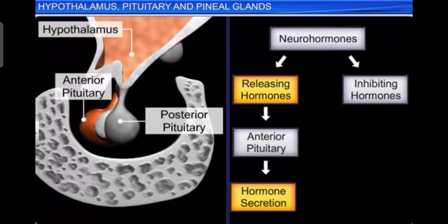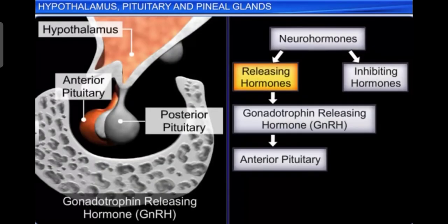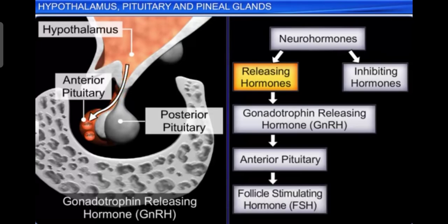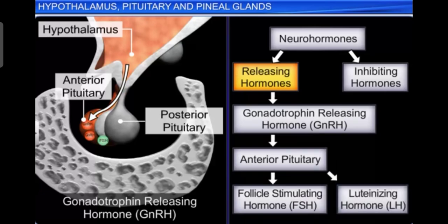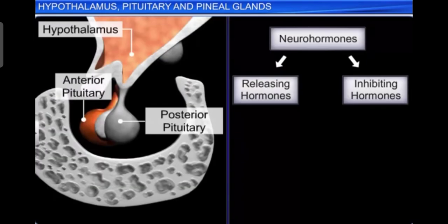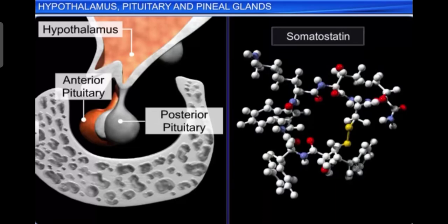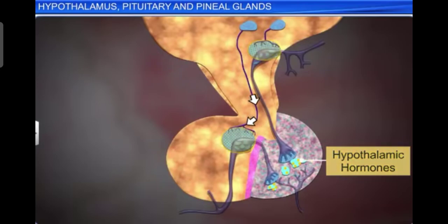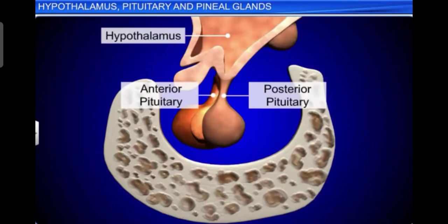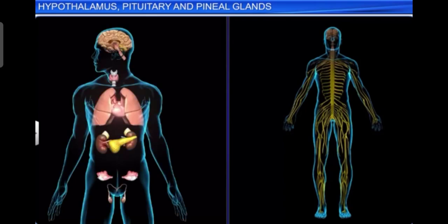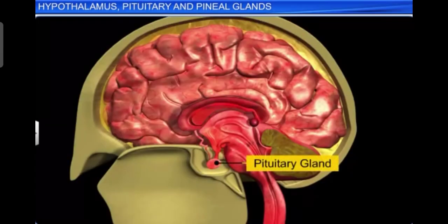Releasing hormones stimulate the secretion of anterior pituitary hormones. For example, the hypothalamic hormone gonadotrophin-releasing hormone stimulates the pituitary synthesis and release of gonadotrophins — FSH (follicle-stimulating hormone) and LH (luteinizing hormone). Inhibiting hormones inhibit secretion of pituitary hormones. For example, somatostatin from the hypothalamus inhibits the release of growth hormone from the pituitary. These hormones pass through axons and reach the pituitary gland through a portal circulatory system.